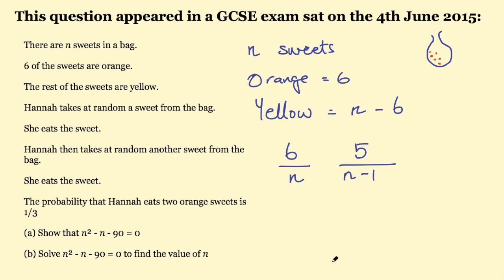All of this so far is perfectly logical problem solving — I haven't pulled out any formulas, I've just taken the information from the question and interpreted it using my knowledge of probability. Now I need to figure out how to make this equal to one third. To find the probability of two events both happening, I multiply those probabilities together.